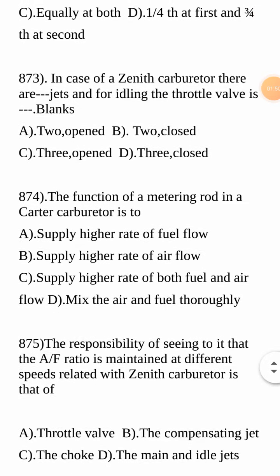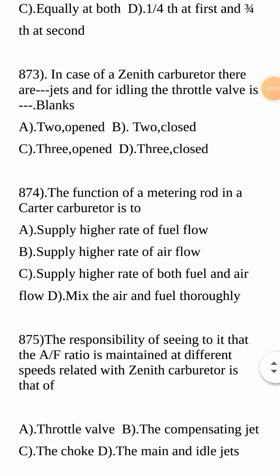Next question: In case of a Zenith carburetor, there are dash jets and for idling the throttle valve is dash. The options are: 2 and open, 2 and closed, 3 and open, or 3 and closed. In case of the Zenith carburetor, there are 3 jets and for idling the throttle valve is closed. The answer is D.